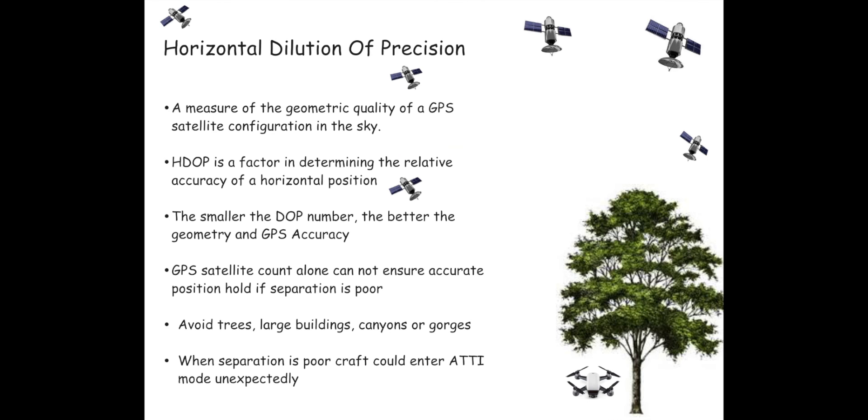As a recap, HDOP is how accurate the data is your aircraft is receiving. It's both the geometric quality and the accuracy of the horizontal position of the aircraft. So it's worth remembering it's not how many satellites your aircraft is picking up but it's actually how close together those satellites are in the sky and how much quality data your GPS can pick up.